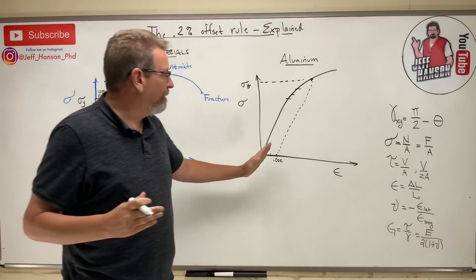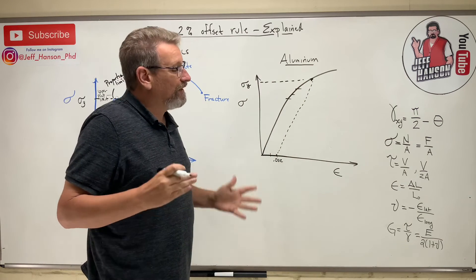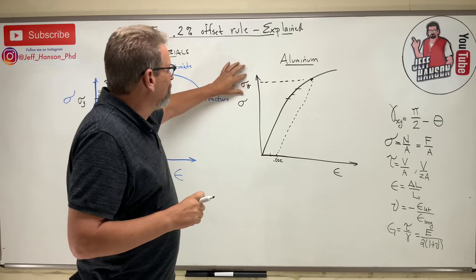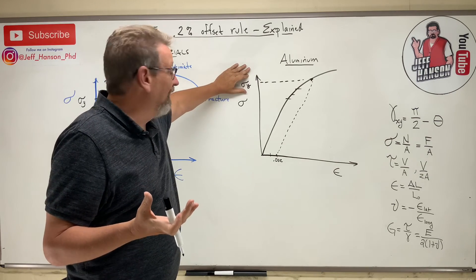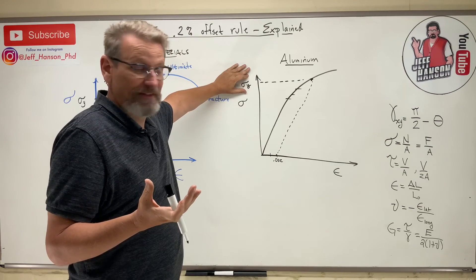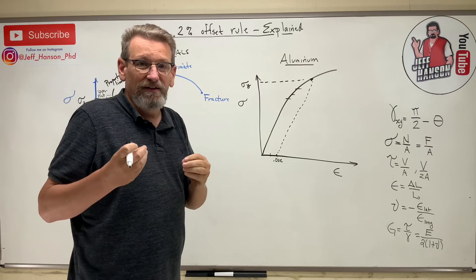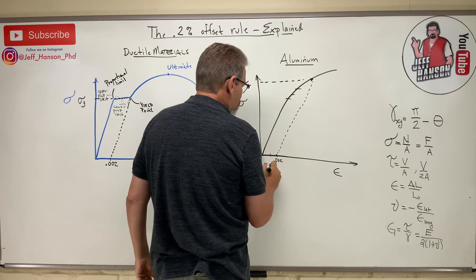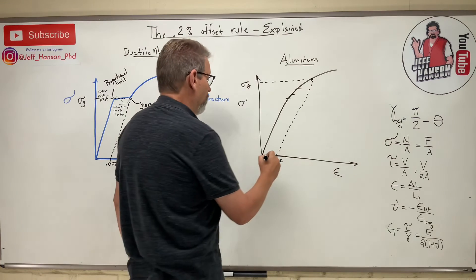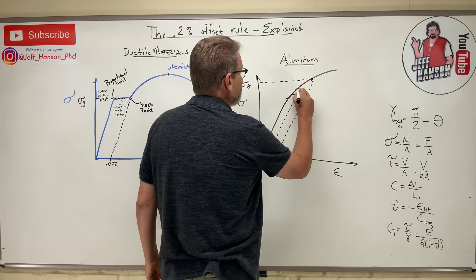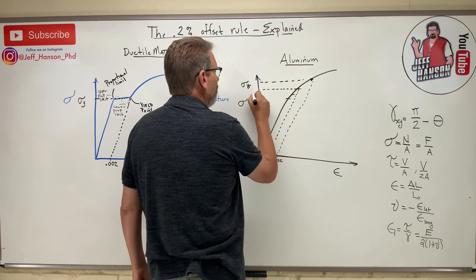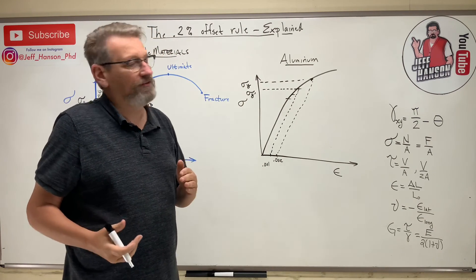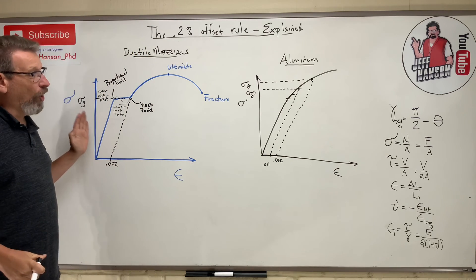Some industries, like the aircraft industry, use a tighter offset. If you're on an airplane and it's permanently deforming, that's a problem. To increase the factor of safety, they might use a 0.1% offset rule — that's 0.001 strain. So for those industries they use something tighter and say right here is the yield point we're going to use, making it a bit safer.